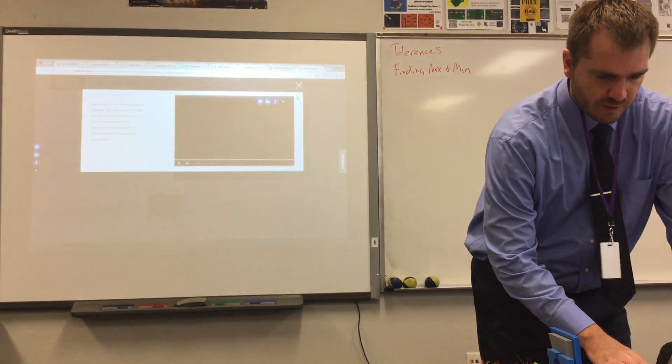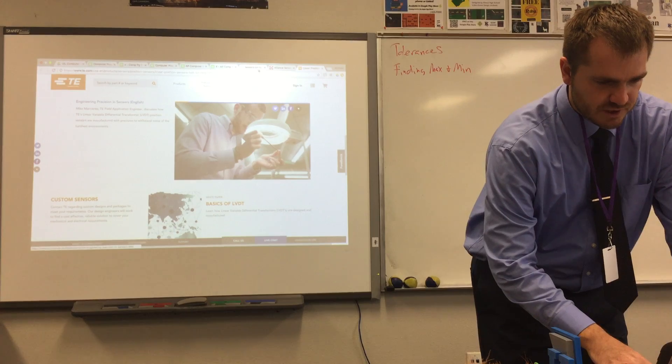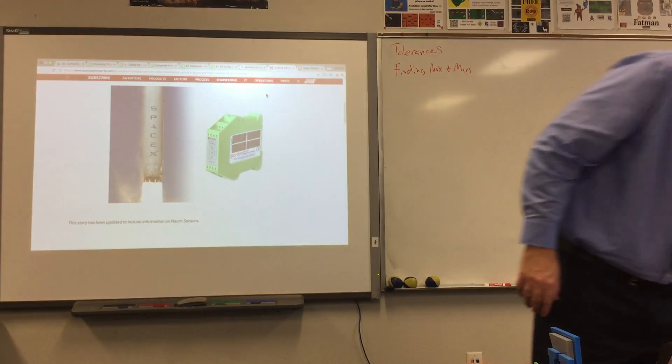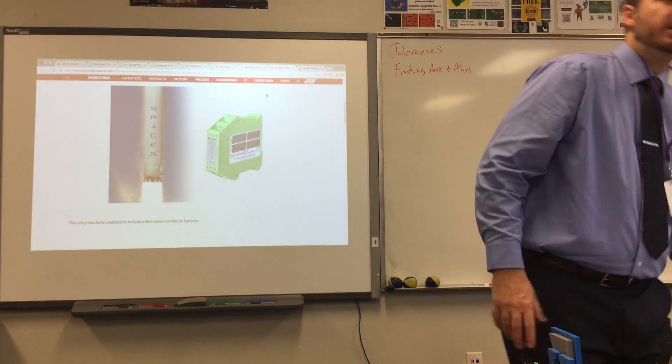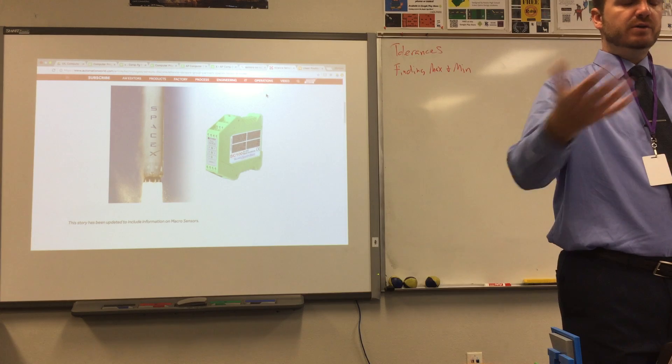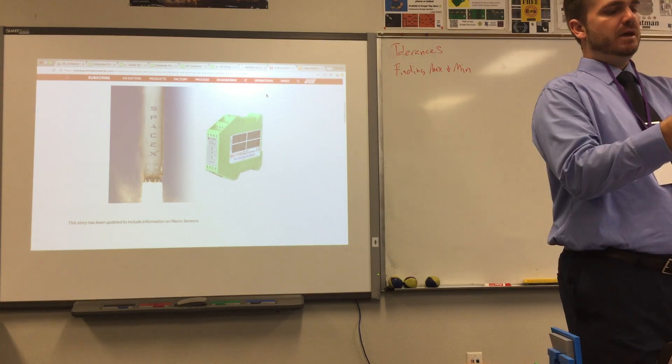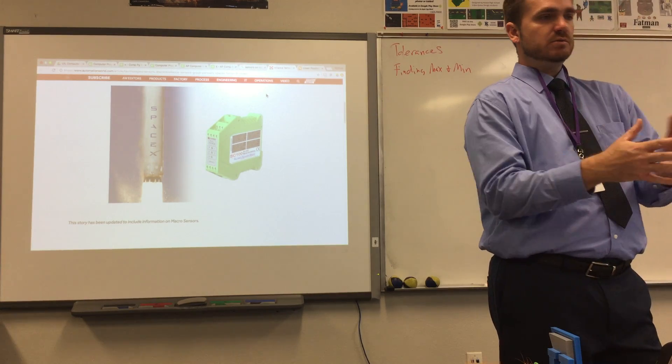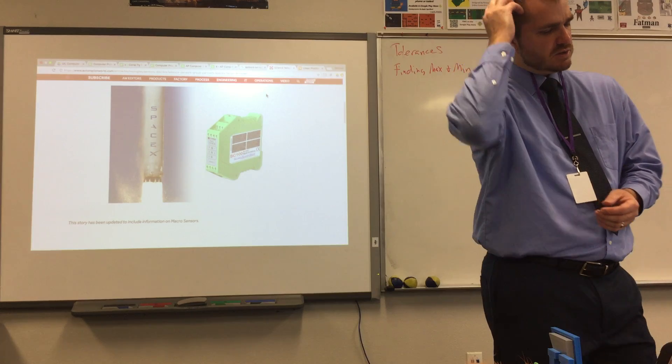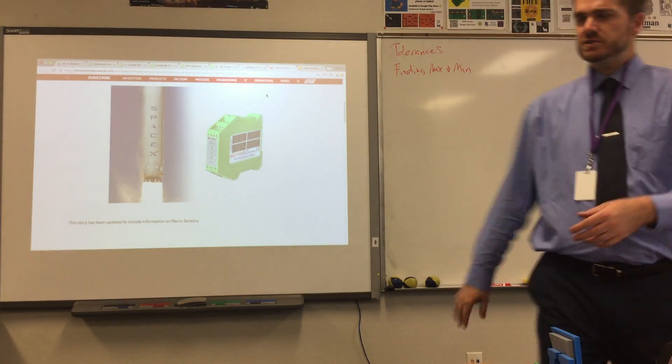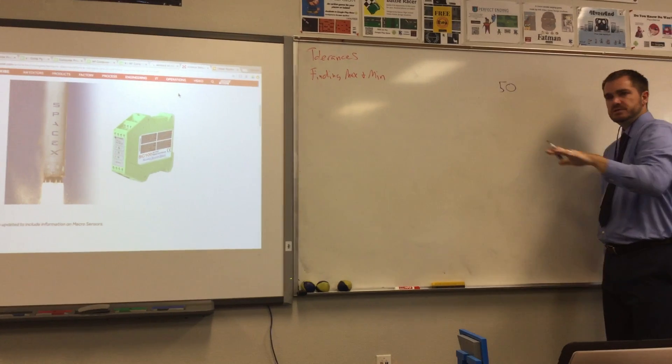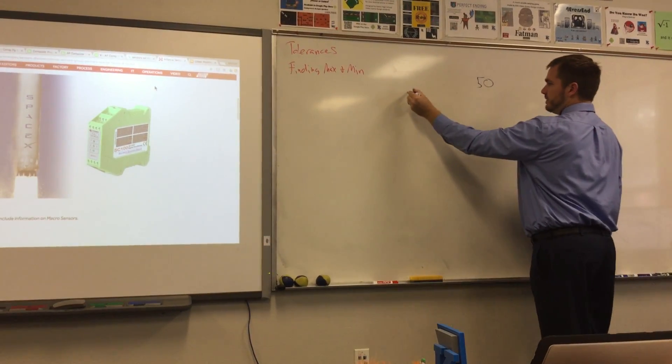So one of the things from the software side that you've got to deal with when you're dealing with sensors is you've got to figure out: is this value that I'm getting from the sensor a good value? Is it within the range of acceptable values or is it outside that range? Let's say you've got some temperature sensor. We're all familiar with that. Let's say you want it to be 50 degrees.